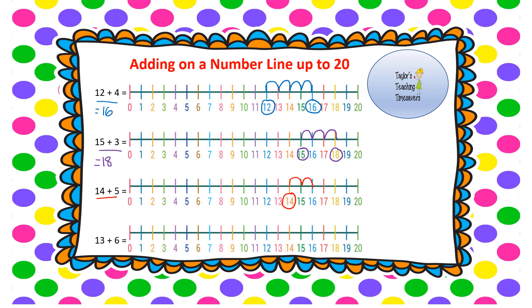Next question: 14 add 5. Start at 14, jump on 5 places: 1, 2, 3, 4, 5. We've landed on 19, just under 20, so 14 add 5 equals 19. Last question: 13 add 6. Find 13 on the number line, jump on 6 spaces: 1, 2, 3, 4, 5, 6. We've landed on 19, so 13 add 6 equals 19.